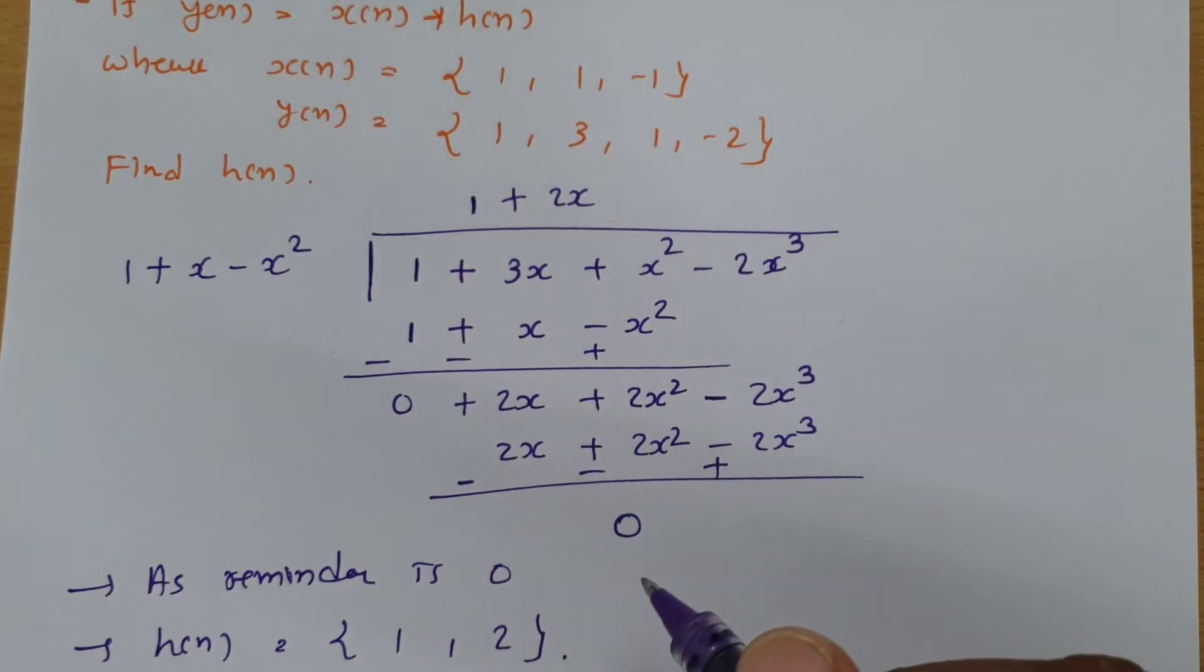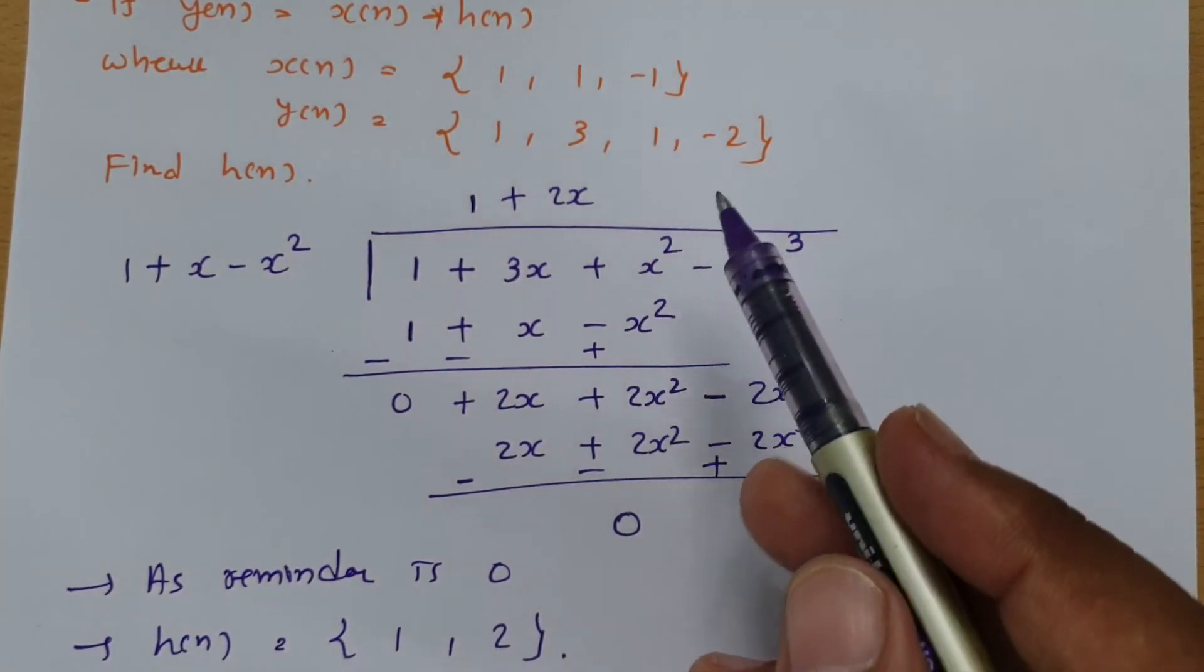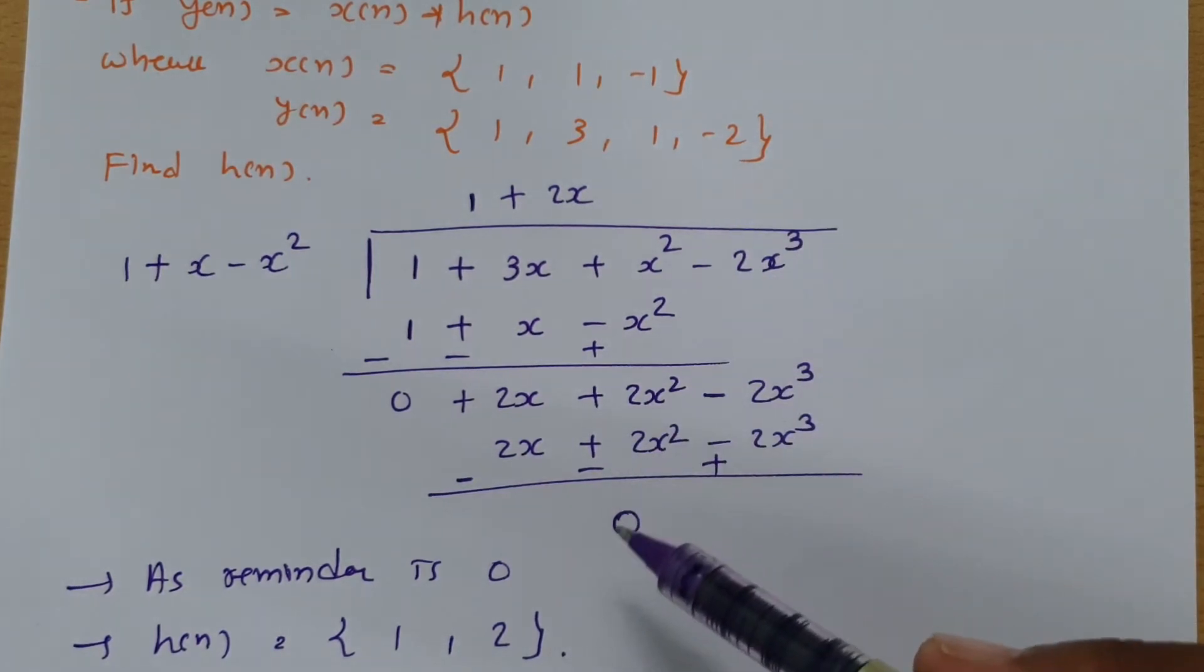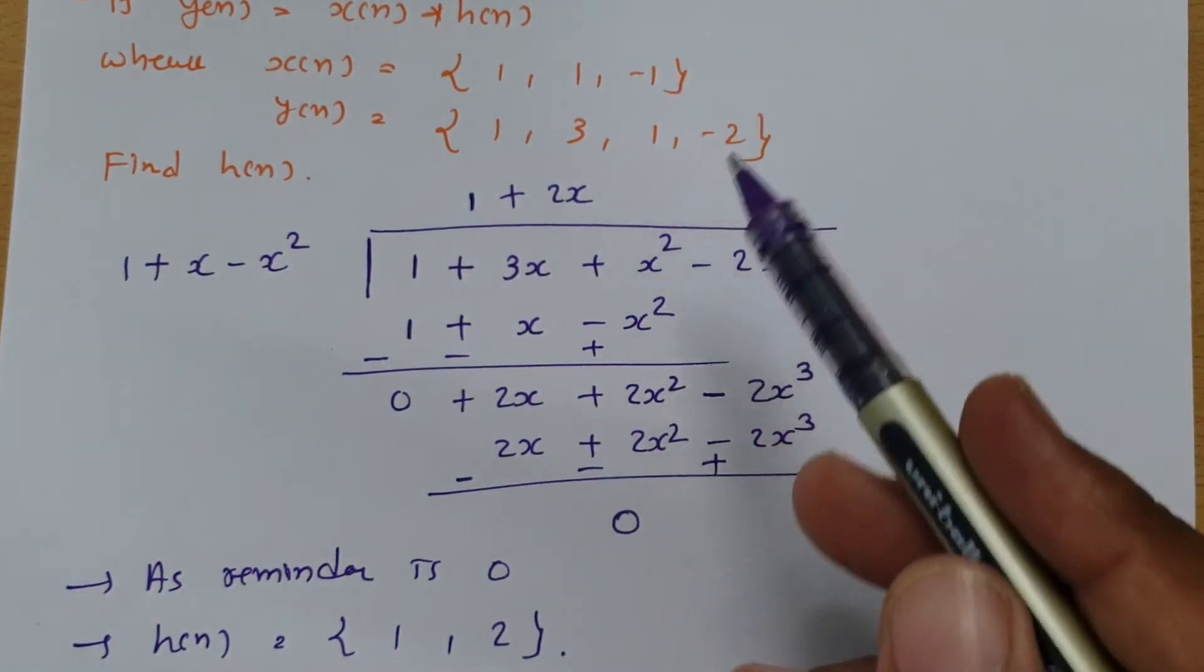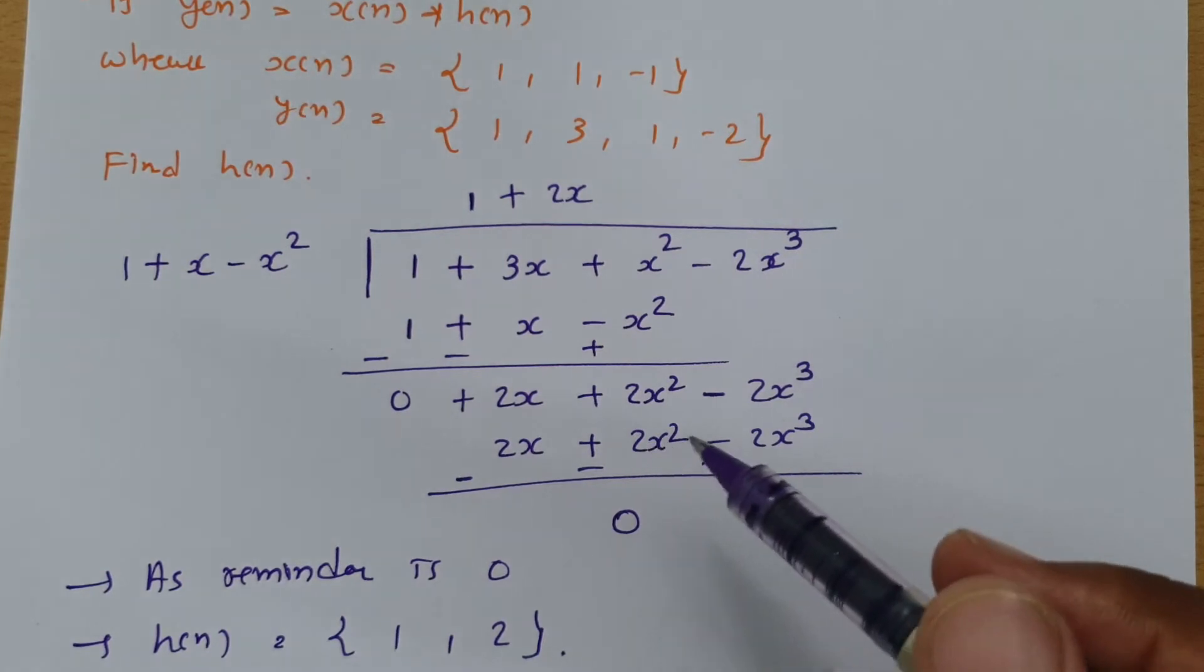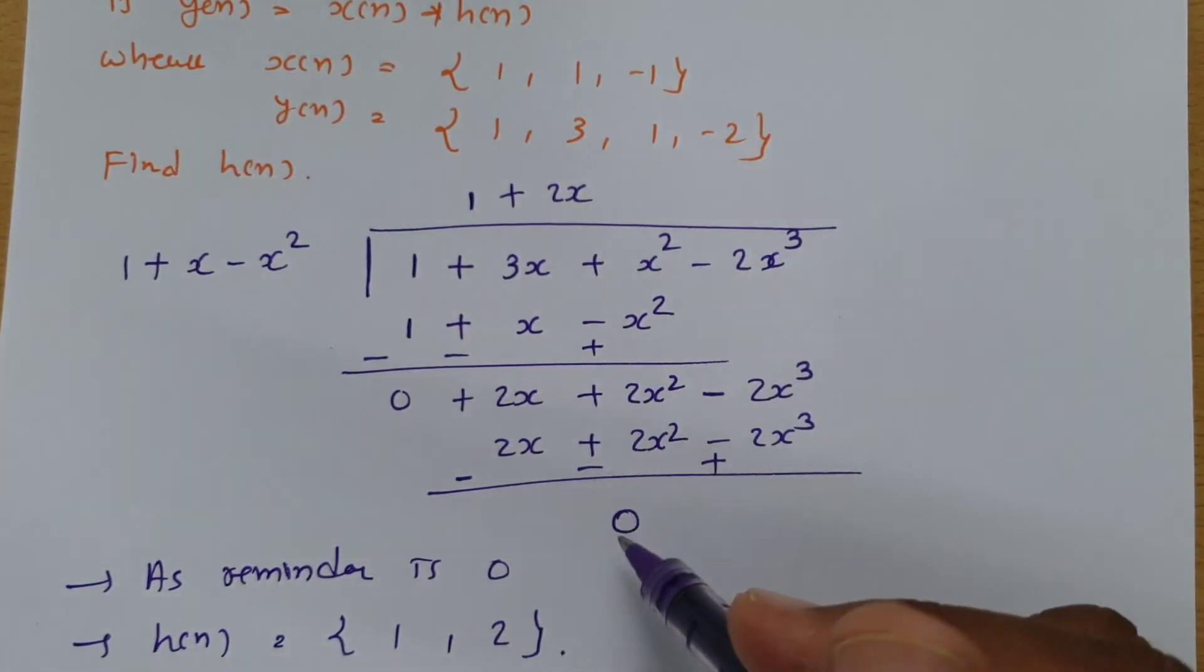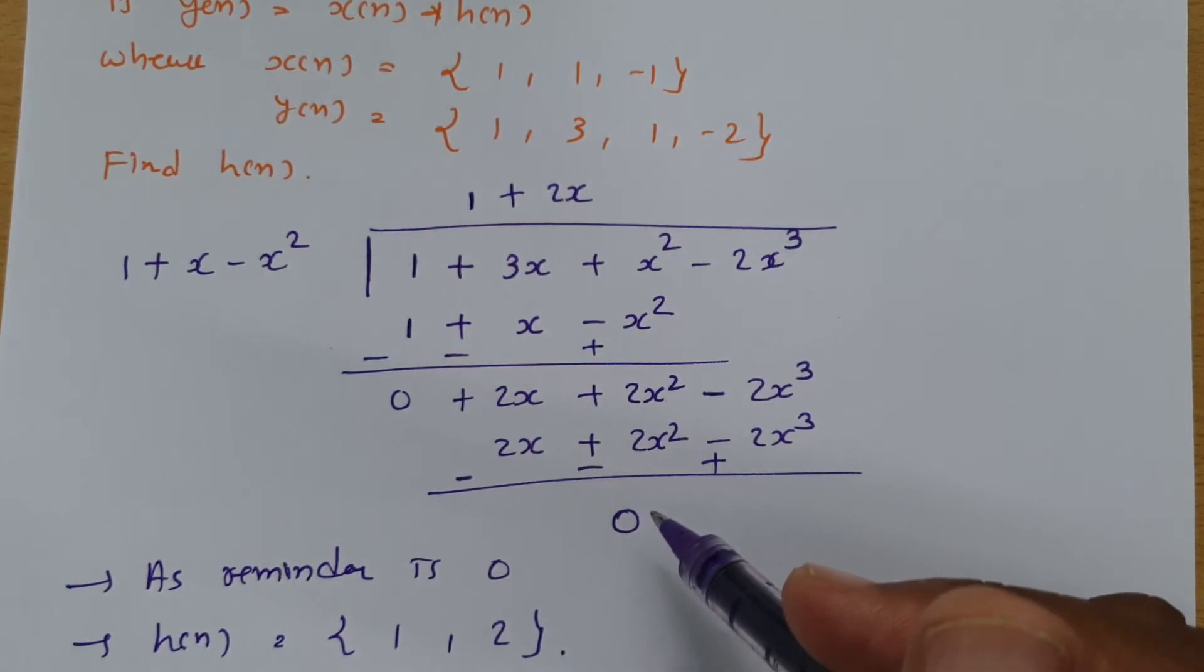Now see, one problem can occur when you do this division. If the remainder is not zero, then this calculation is false, meaning h(n) cannot be obtained. If the remainder is not 0, deconvolution is not possible.